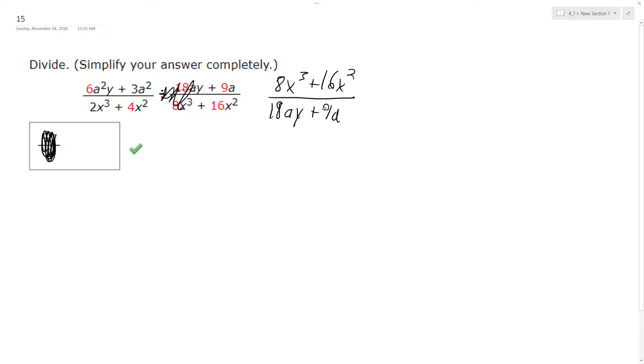So I'm multiplying by this, so I can go ahead and start factoring. So the first term, top left, I can factor out 6a squared and I get y plus 3. On the bottom I can factor out 2x squared and I get x plus 2.